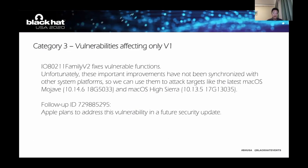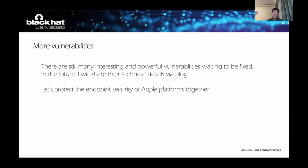The third category is vulnerabilities affecting only version 1. In other words, version 2 fixes these vulnerable functions. Unfortunately, these important improvements have not been synchronized with other system platforms. So we can use them to attack targets like the latest macOS Mojave and macOS High Sierra. In addition to the above vulnerabilities, I have at least a dozen new zero days waiting to be fixed, but I cannot share their details this time. Maybe in the future I will share these interesting and powerful vulnerabilities through a blog. Let's work together to protect the endpoint security of Apple platforms.